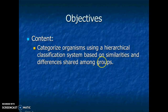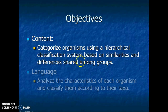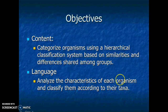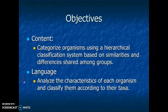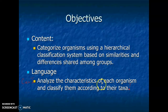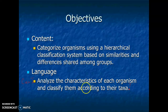When we talk about groups, we're basically talking about groups of organisms. The language objective is to be able to analyze the characteristics of each organism and classify them according to their taxa. We want to learn what taxa is today. If you want to make this into an essential question, just to make sure that we have that written down in our Cornell notes, this is what we need to be able to do by the end of class.